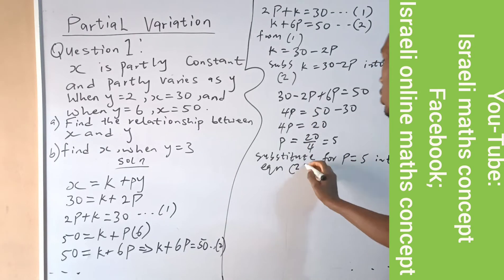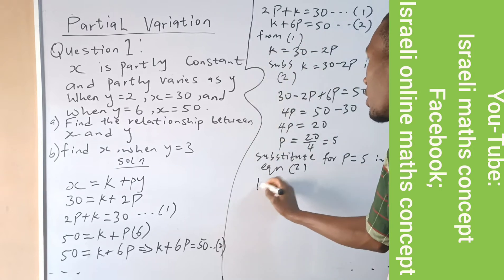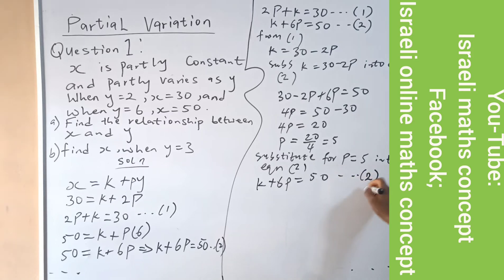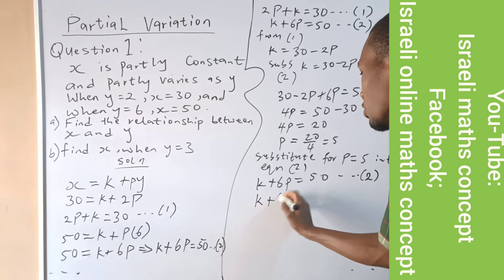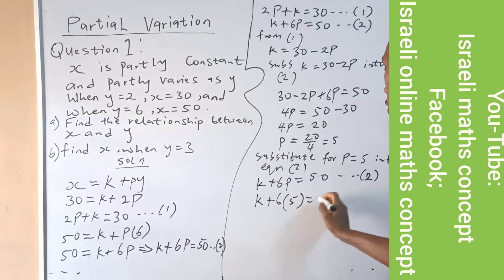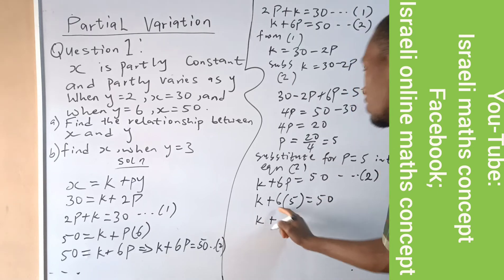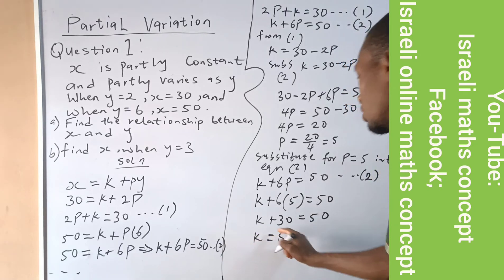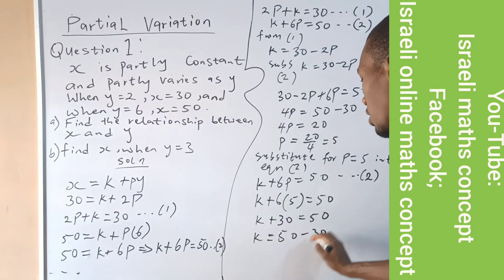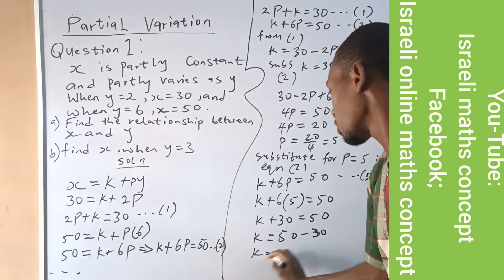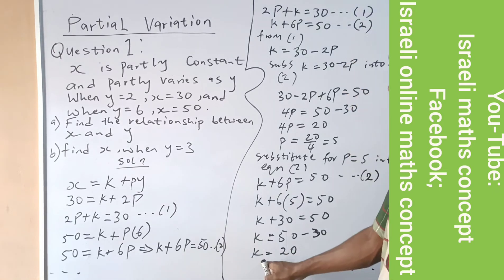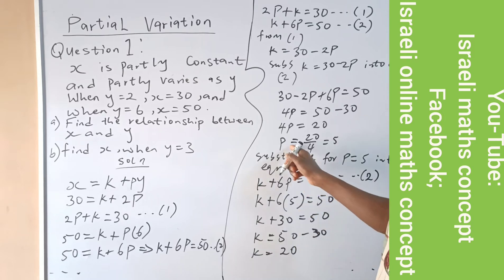Let me take equation 2, which states k plus 6p equals 50. Wherever I see p, I replace it with 5. So k plus 6 times 5 is 30, equals 50. Then k equals 50 minus 30, which is automatically 20. I have succeeded in finding k equals 20 and p equals 5.